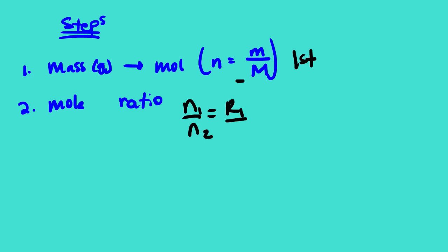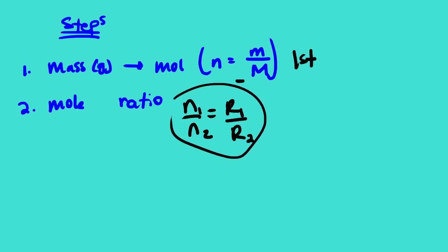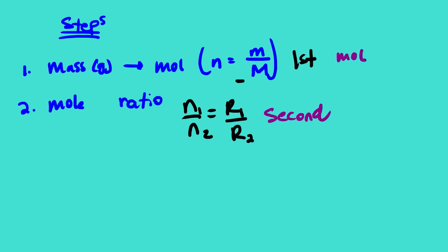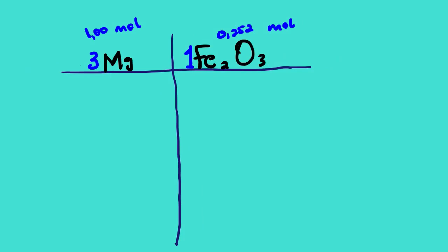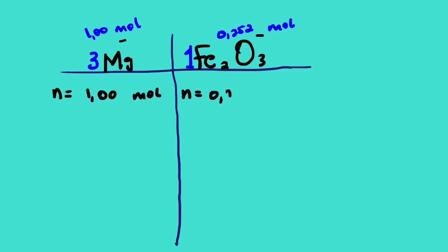The mole ratio equation is: n of reactant 1 over r₁ equals n of reactant 2 over r₂, where r₁ and r₂ are the stoichiometric coefficients. Since we are already given moles (not mass in grams), we skip Step 1 and go straight to Step 2. The given values are 1.00 mol magnesium and 0.252 mol iron(III) oxide.